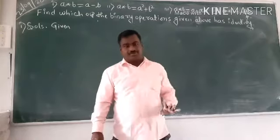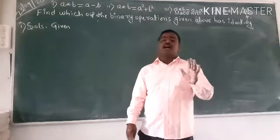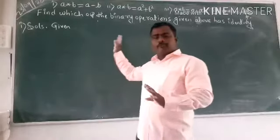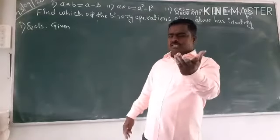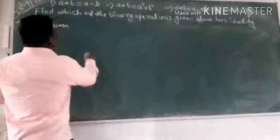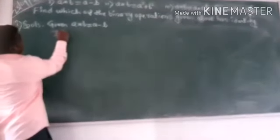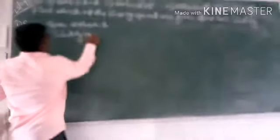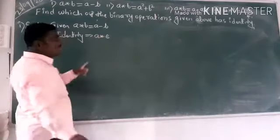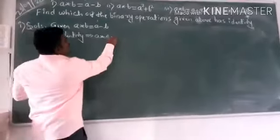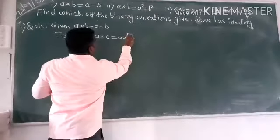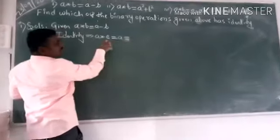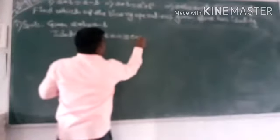In the same way, we are going to define for the binary operation which elements are identity. Let us discuss this problem. Few problems are there, one by one. So clearly a star b is equal to a minus b. What is the identity? That is the important definition of the identity. I hope you know that a star e, e is the identity of binary operation.